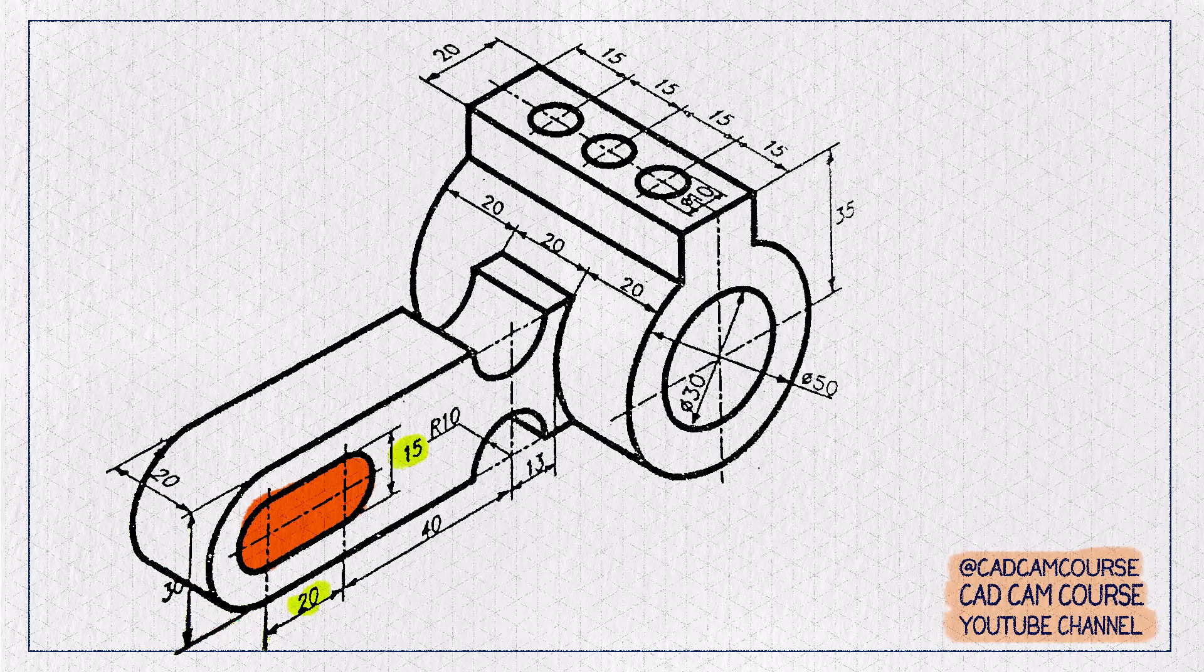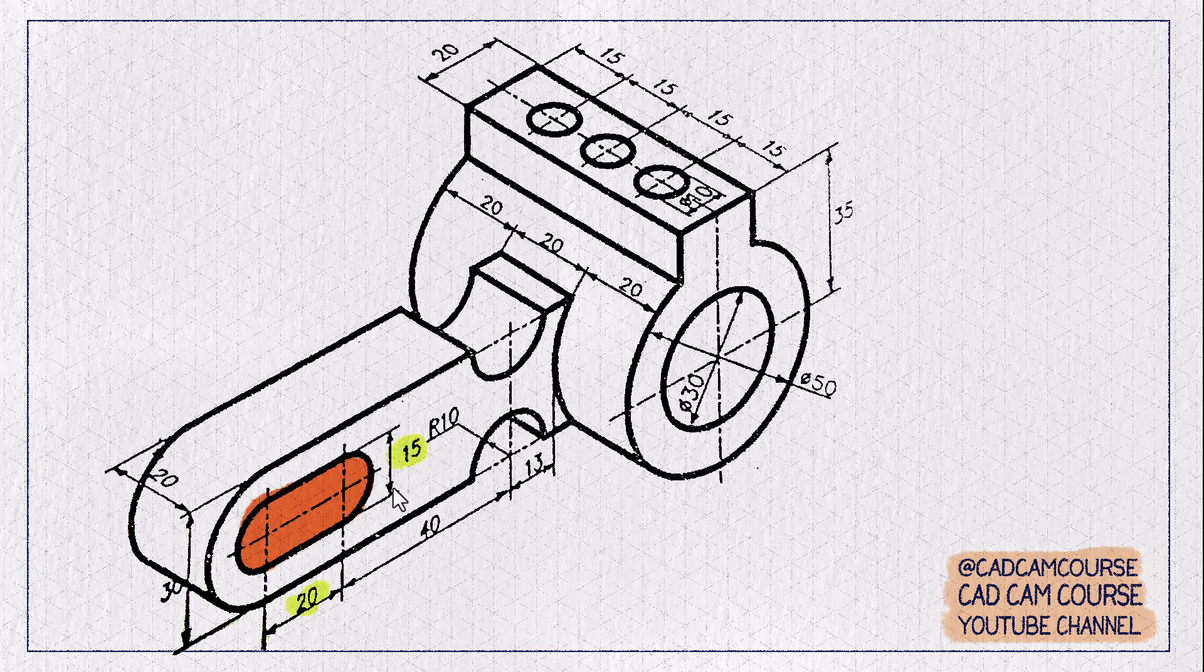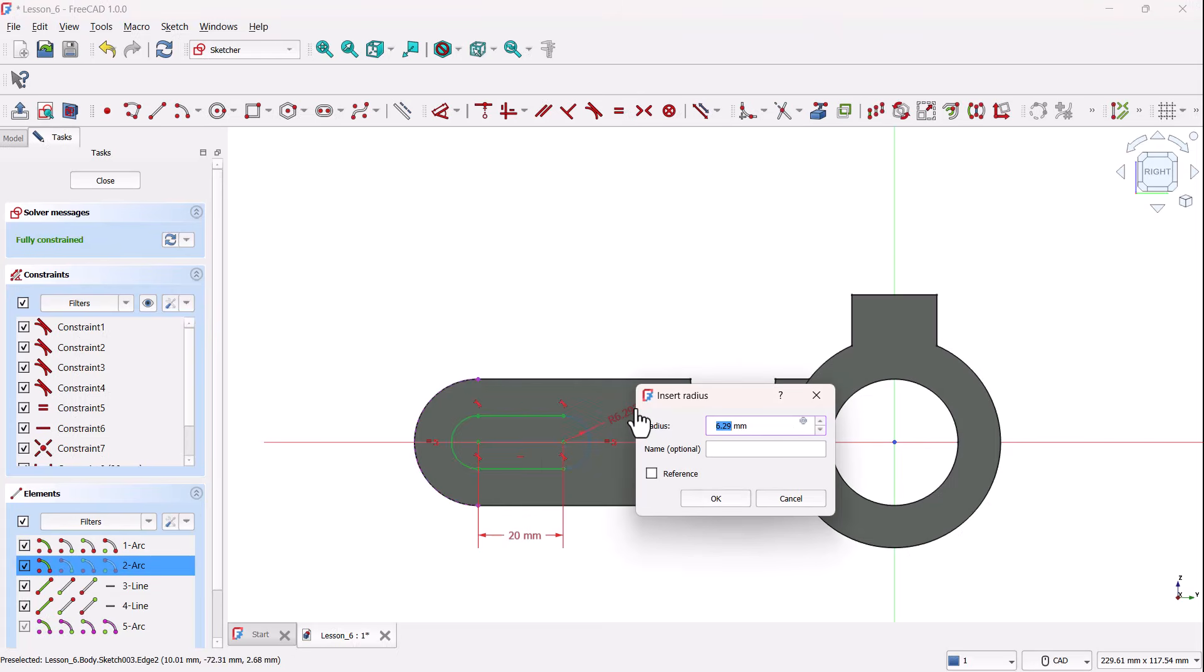Next, let's define the width of the slot. The diameter of the arc is 15 millimeters. So, the radius will be 15 divided by 2, which is 7.5 millimeters. Use the dimension tool, click the slots arc, and enter 7.5 millimeters.